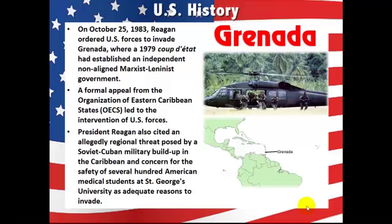The U.S. also took military action in Grenada. On October 25, 1983, Reagan ordered U.S. forces to invade Grenada, where a 1979 coup d'état had established a Marxist-Leninist government not directly aligned with the Soviet Union. A formal appeal from the Organization of Eastern Caribbean States led to the intervention, and Reagan also cited an alleged Soviet-Cuban military buildup in the Caribbean and concern for the safety of several hundred American medical students at St. George's University as reasons to invade.